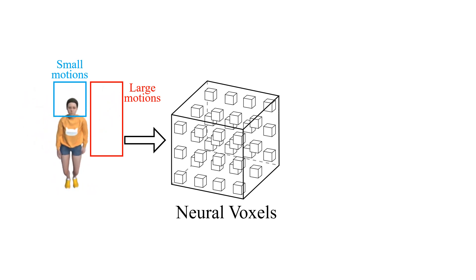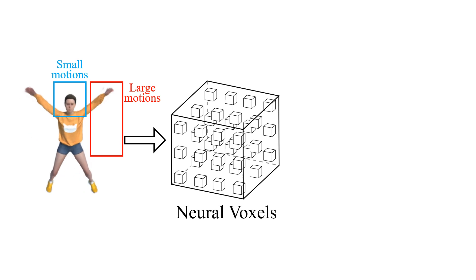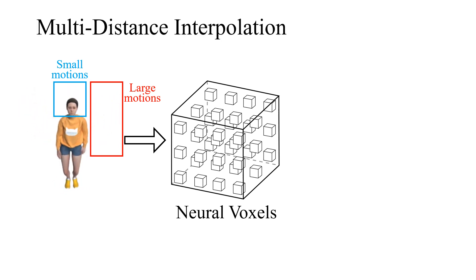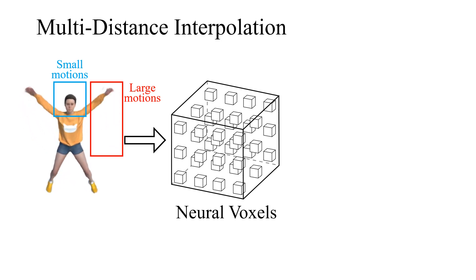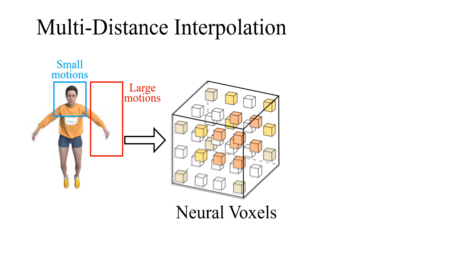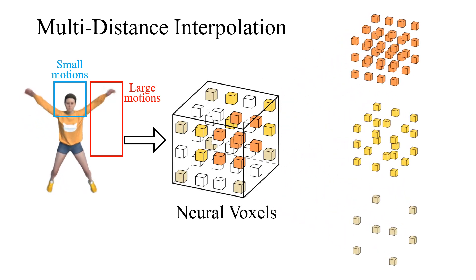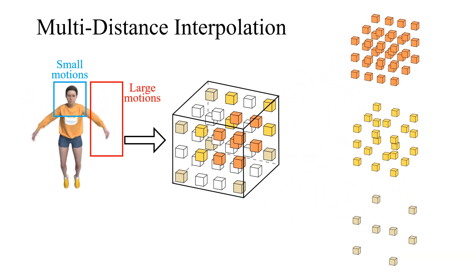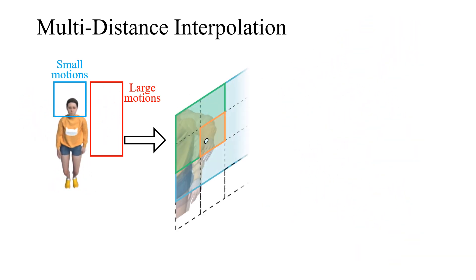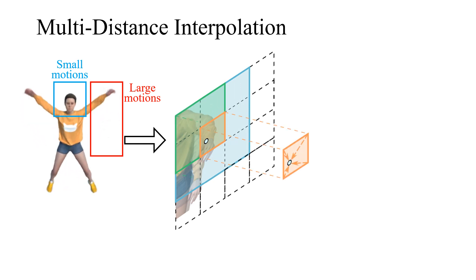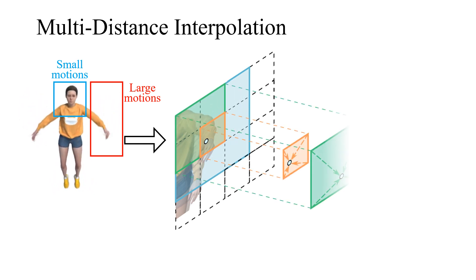To capture point motions with both small and large scales, we propose a multi-distance interpolation method. We sample voxel features with different intervals to form three grids of different sizes. The interpolation is performed within the three grids where motions in different scales can be captured.